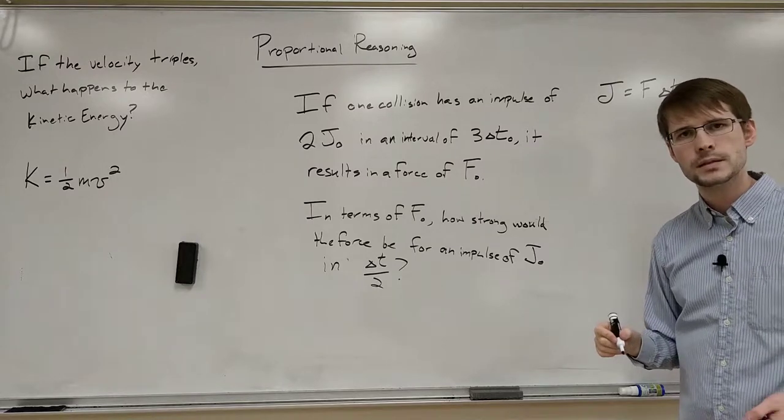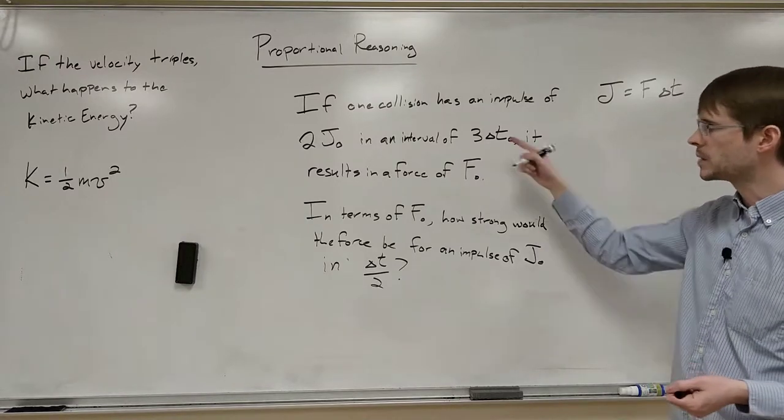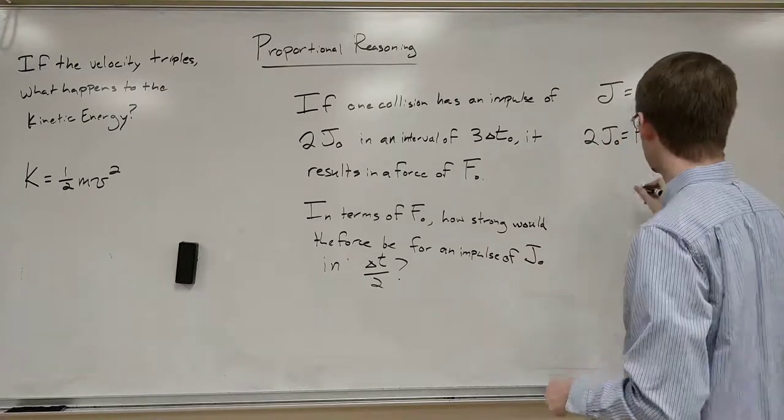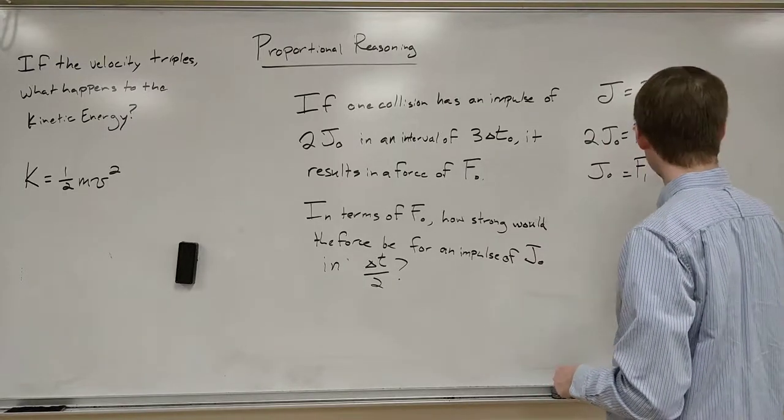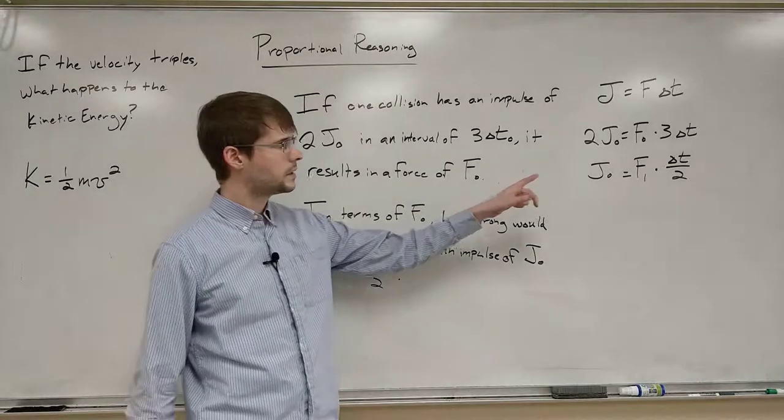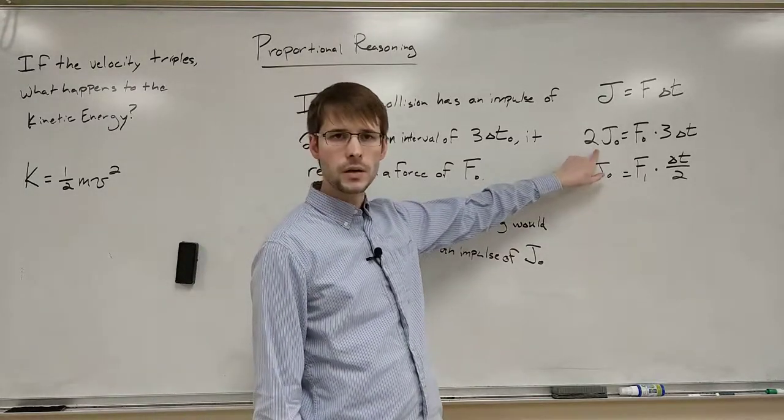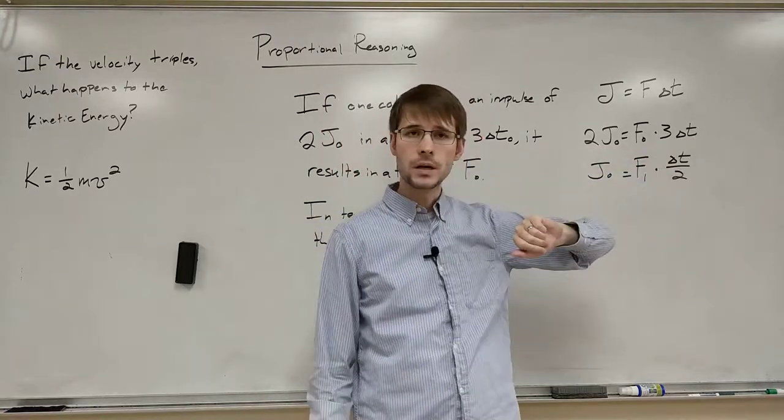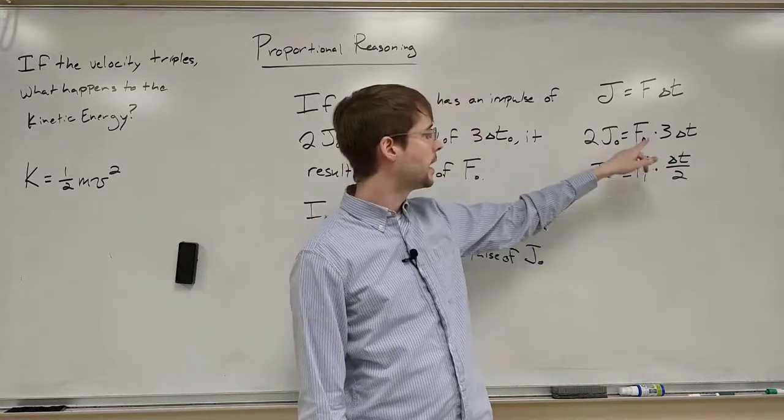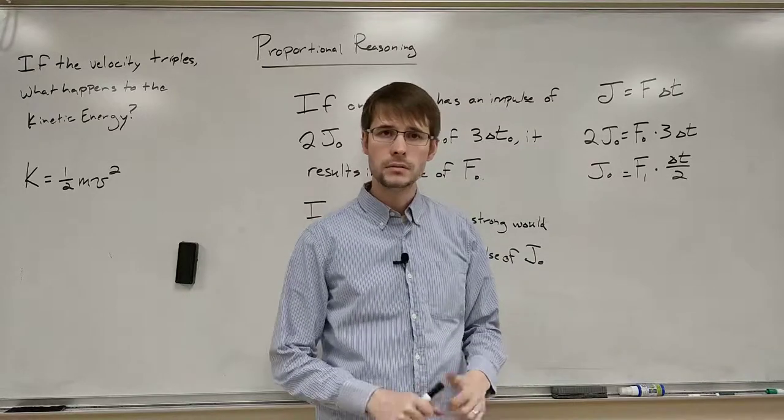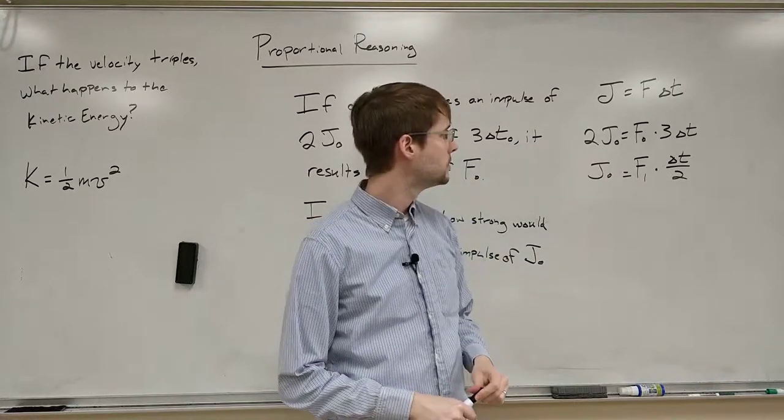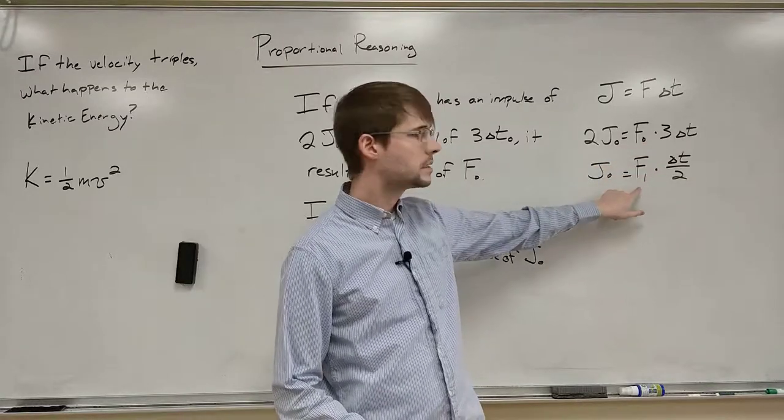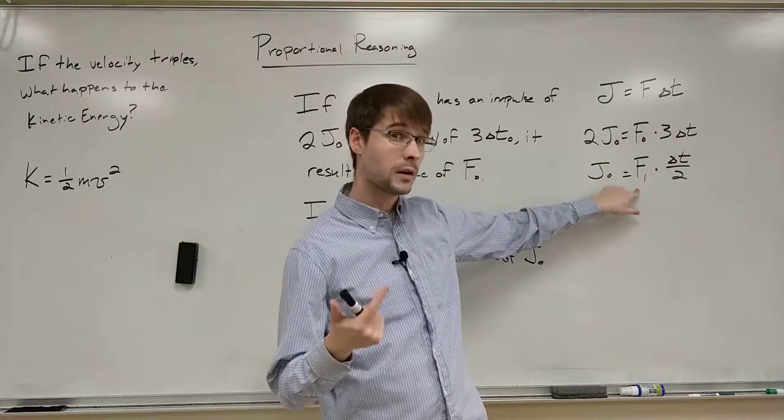We're going to set up some equations the same way we did before, but we're actually going to plug all these numbers in. And so we've got here the first equation that we've got. It says 2 times j0 for the impulse, 3 times delta t for the time, and the force is actually just f, and then f0. And then here, this is for some new force we'll call force 1, or f1.